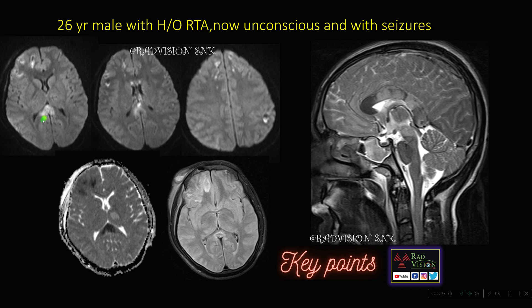Here you can see there is restricted diffusion on DWI noted in the splenium of corpus callosum, and even at some pericallosal area and in subcortical bilateral frontal lobes and even the left parietal lobe, with low ADC values. This was a case of diffuse axonal injury. Diffusion weighted imaging is a key sequence in helping diagnose diffuse axonal injury.